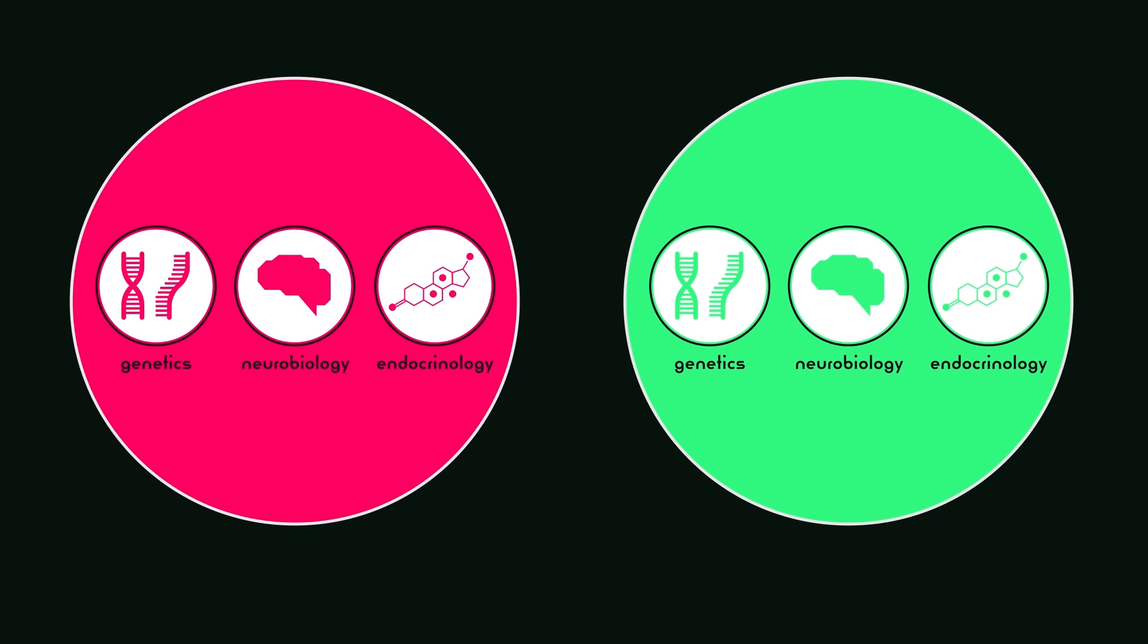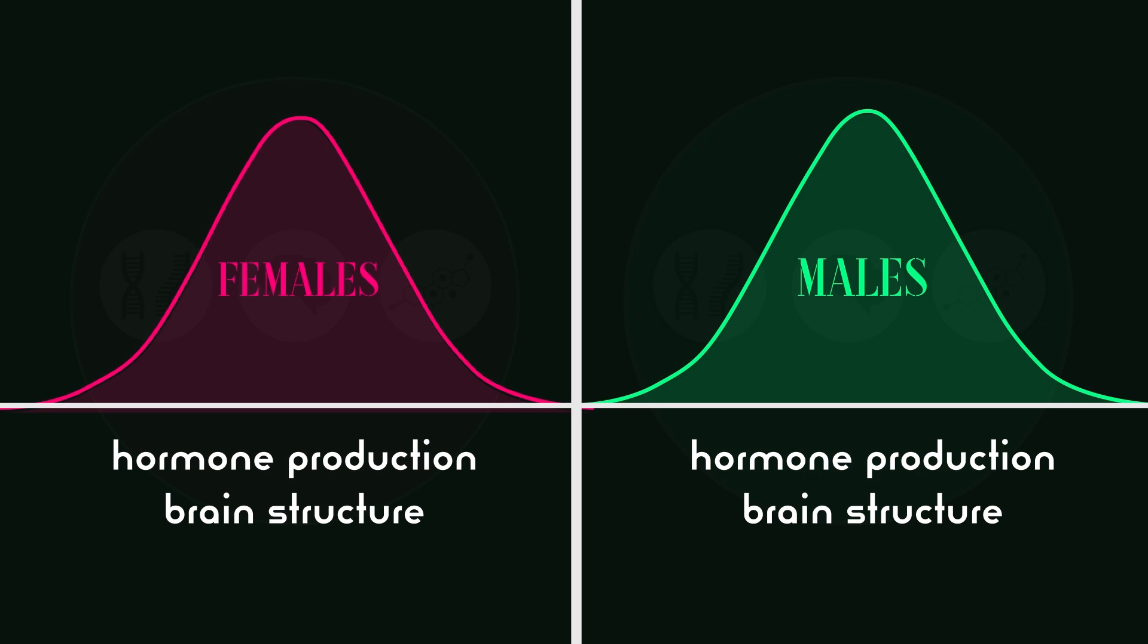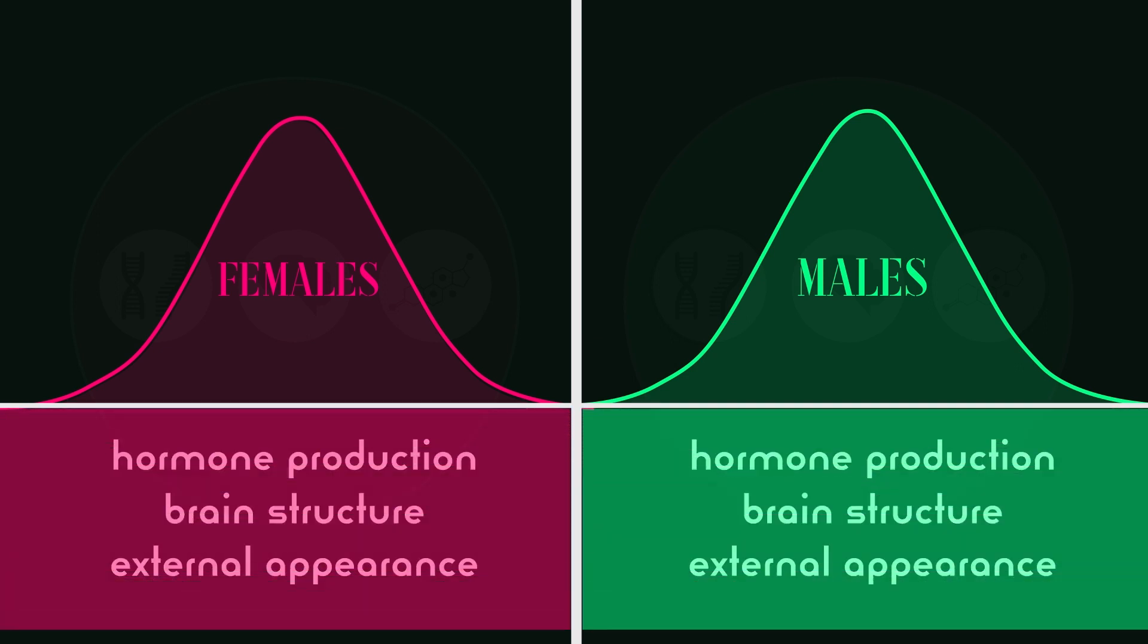Sex differences exist as two distributions, a separate distribution for males and a separate one for females. There is variation of hormone production, brain structure, and external appearance, but this does not make a sex spectrum. Rather, it makes a spectrum of variation in anatomy and physiology, within males and females.